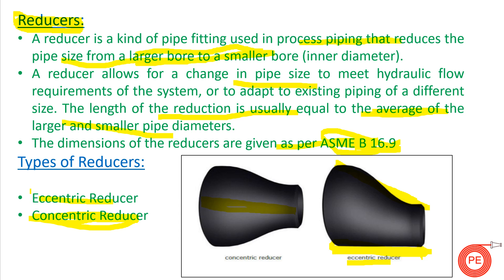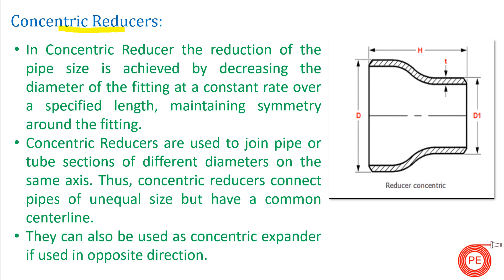What is a concentric reducer? In a concentric reducer, the reduction of the pipe is done at both ends. It is achieved by decreasing the diameter of the fitting at a constant rate over a specified length. This length is given as per ASME B16.9 and is fixed depending upon the diameter reduction — as D and D1 change, the length of the reducer also changes.